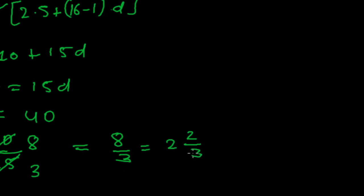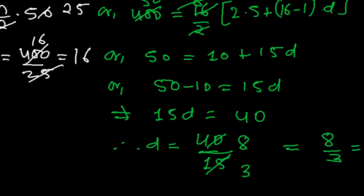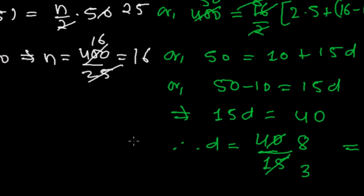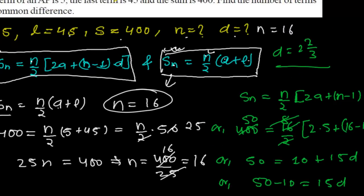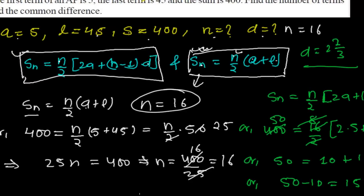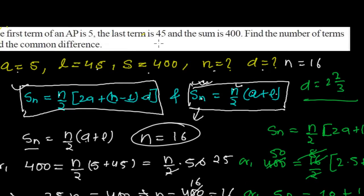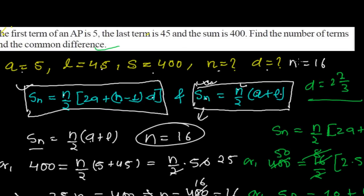So the common difference is 8/3, which can also be written as 2 and 2/3. We have now found both values the question required: the number of terms n = 16 and the common difference d = 8/3.